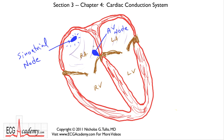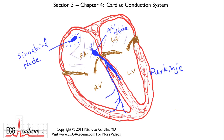The AV node is a collection of specialized cells that can generate electrical signals. These cells receive the signal from the atria and delay it for a split second. Then the AV nodal cells are connected to a network of very long, branching heart muscle cells — like branches of a tree. These long cells are known as Purkinje fibers — P-U-R-K-I-N-J-E — and they're bundled together in the septum with a thin bundle that goes off to the right side, which we call the right bundle branch.